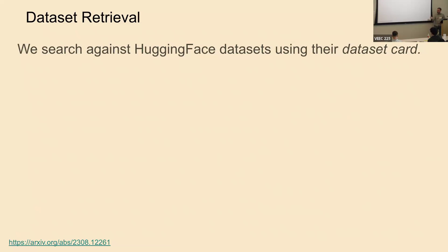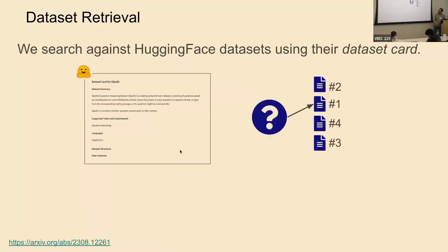Basically, what we do is we have the dataset card, and then we train a retriever where we take in our prompt and we try to match the test description to the most relevant dataset.